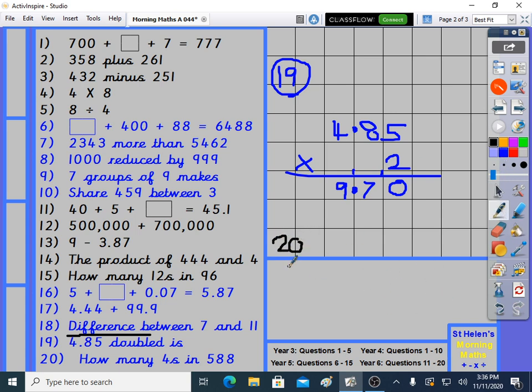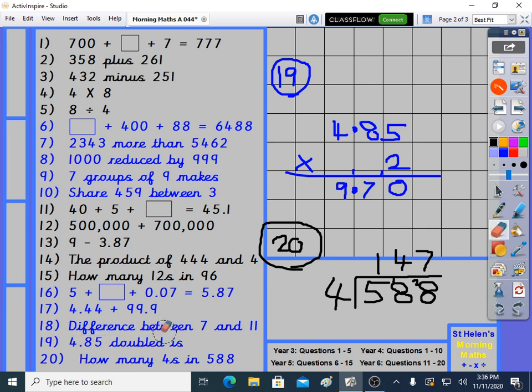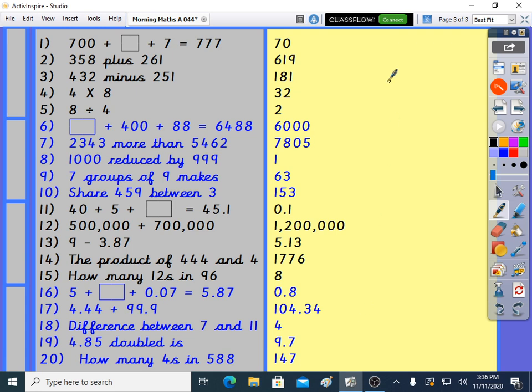Question 20: How many 4s in 588? Let's see. How many 4s in 5? It's 1 remainder 1. How many 4s in 18? 4 remainder 2. And there's 7 in 28. 147. What sport is that a famous number in? I wonder if you know. Let's go to the answers. Hopefully they're all correct. Let someone know if they're not. And thanks for listening. I'll see you again next time on day 45. Bye.